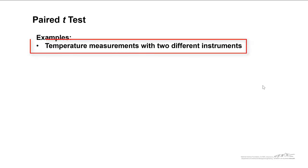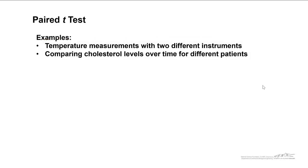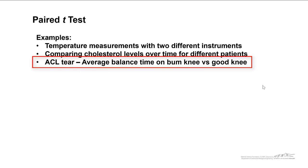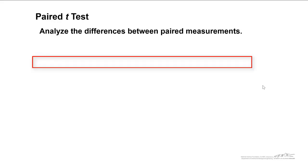Other examples would be temperature measurements with two different instruments. Comparing cholesterol levels over time for different patients. Cholesterol levels just by their very nature are going to be very different in people, but the important thing is looking at the decrease in cholesterol levels in a single patient. That's an example of a paired experiment. Maybe an ACL tear, maybe you look at the average balance time on a bum knee versus a good knee. Everybody's going to be able to balance on a good knee for different periods of time, but the important thing is when you're looking at rehabilitating an ACL tear, you want to look at the difference between those balance times in the same patient, not among patients.